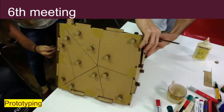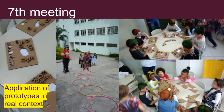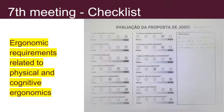At the sixth meeting, the adolescents received guidelines for prototyping their products made in cardboard. The seventh meeting served to apply the prototype in the real context in order to verify how the products would be used, whether they were suitable for the target audience, whether they were safe, and a series of other observations made from a checklist that each adolescent had in hand to guide the observations. The checklist served to assess whether the requirements had been met and whether the proposal was created in accordance with physical and cognitive ergonomic requirements.